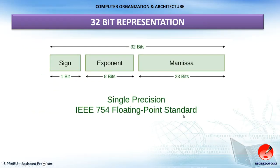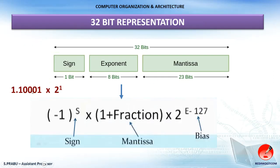Now let's see the 32-bit representation. The formula is: (−1)^S × (1 + fraction) × 2^E. Here S is the sign bit. The '1 +' does not mean adding 1 to the fraction separately — in this standard format, 1 is always present before the dot, so the fractional part is the mantissa. The scaling factor is the base raised to the exponent. If the sign bit S is 0, (−1)⁰ = 1, giving a positive number. If S is 1, (−1)¹ = −1, giving a negative number.